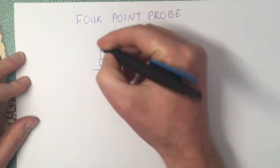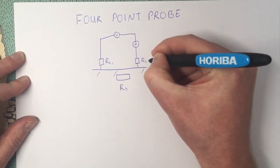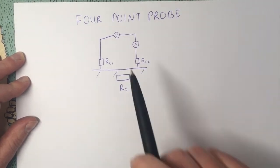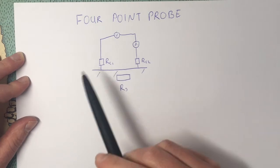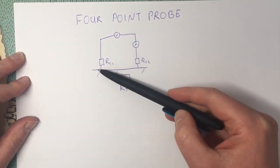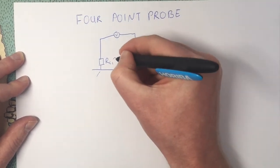So I'll call this RC1, call this RC2, so contact resistance 1 and 2. Because this is very unreproducible, these contact resistances are basically unknown. We don't know what they are.